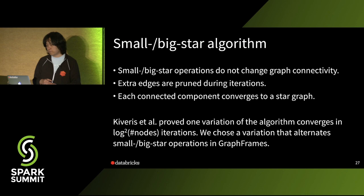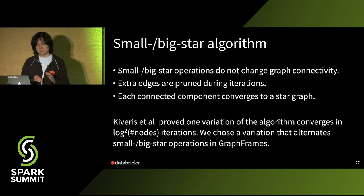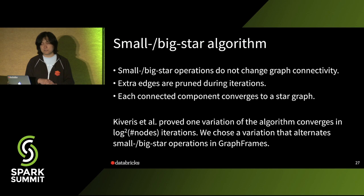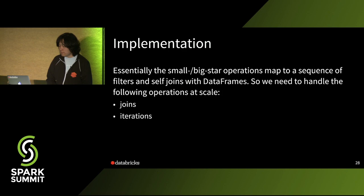There are multiple variations of this algorithm in the paper. The authors proved one variation has log-squared complexity in the number of iterations on the number of nodes. We picked a variation that alternates small star and big star operations in GraphFrames because it's easier to implement. The authors thought this may get log-N iterations, but they didn't prove it — and I tried but didn't find the proof either.